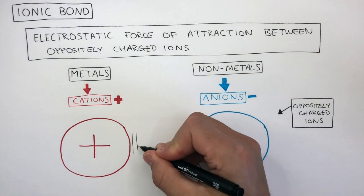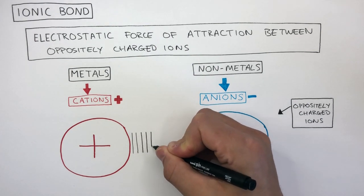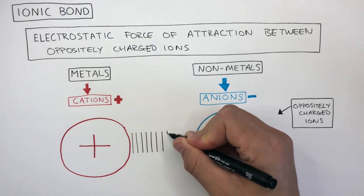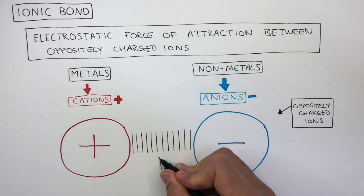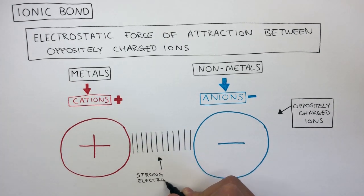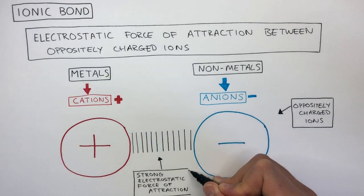In science, a strong electrostatic force of attraction will always form between oppositely charged ions. These lines represent an ionic bond, which is the strong electrostatic force of attraction between oppositely charged ions.